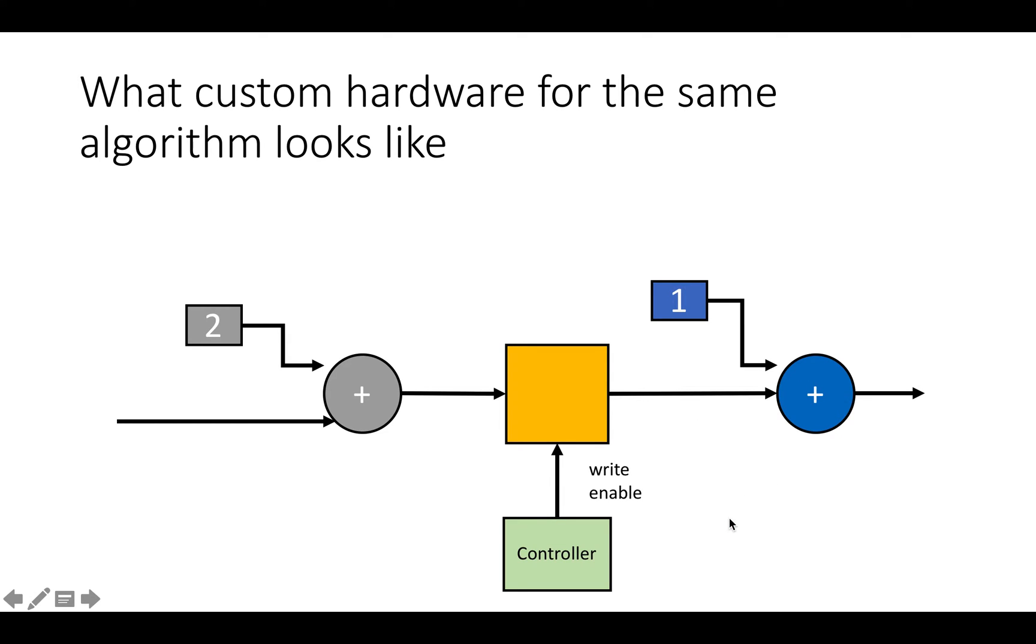And when we execute this, we're going to have values come in on the wire. So if the value two comes into the wire, it's going to get two added to it and become four. The write enable is going to toggle and four is going to get put into this register. It's going to flow out on this wire. We're going to add one to it and five is going to come out at the end.